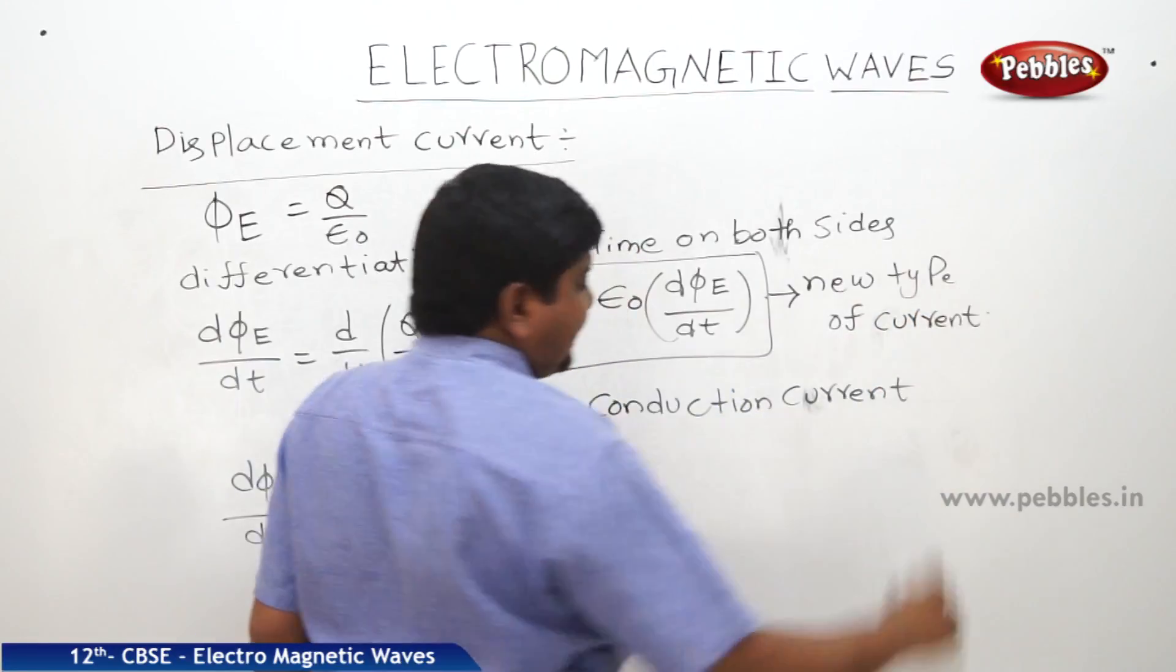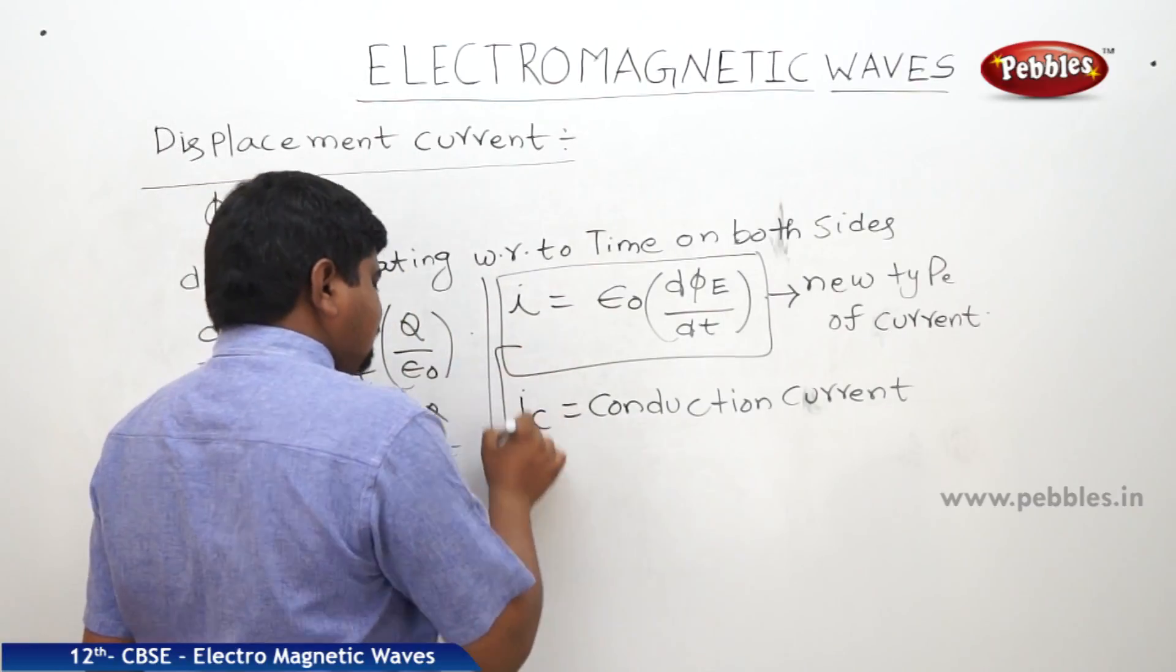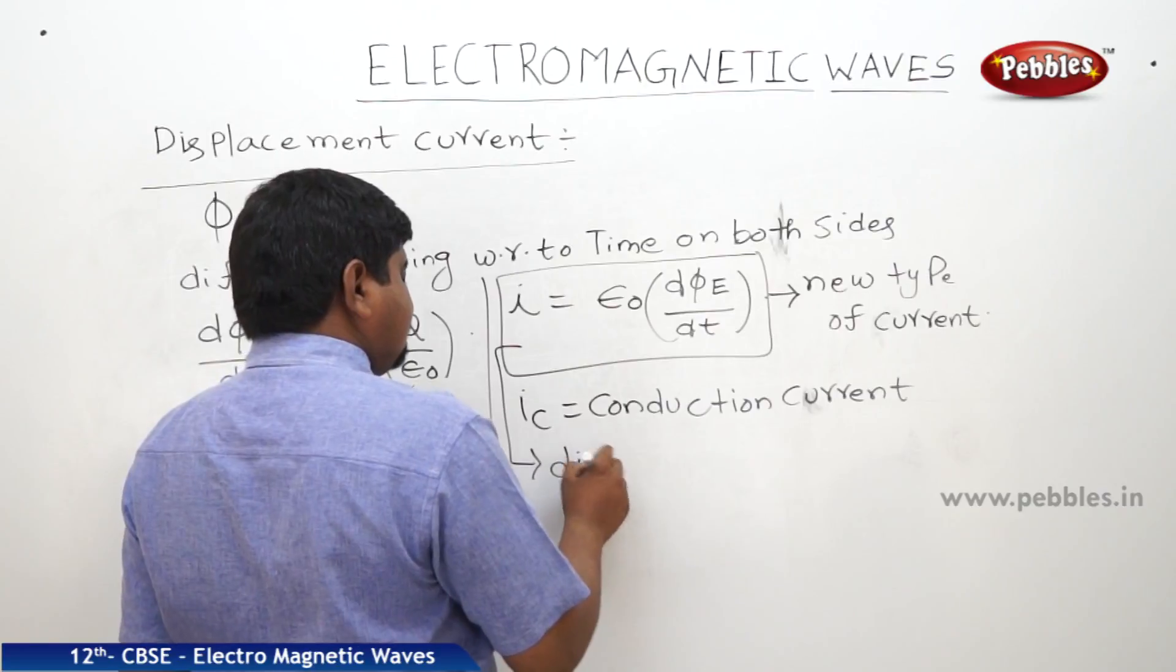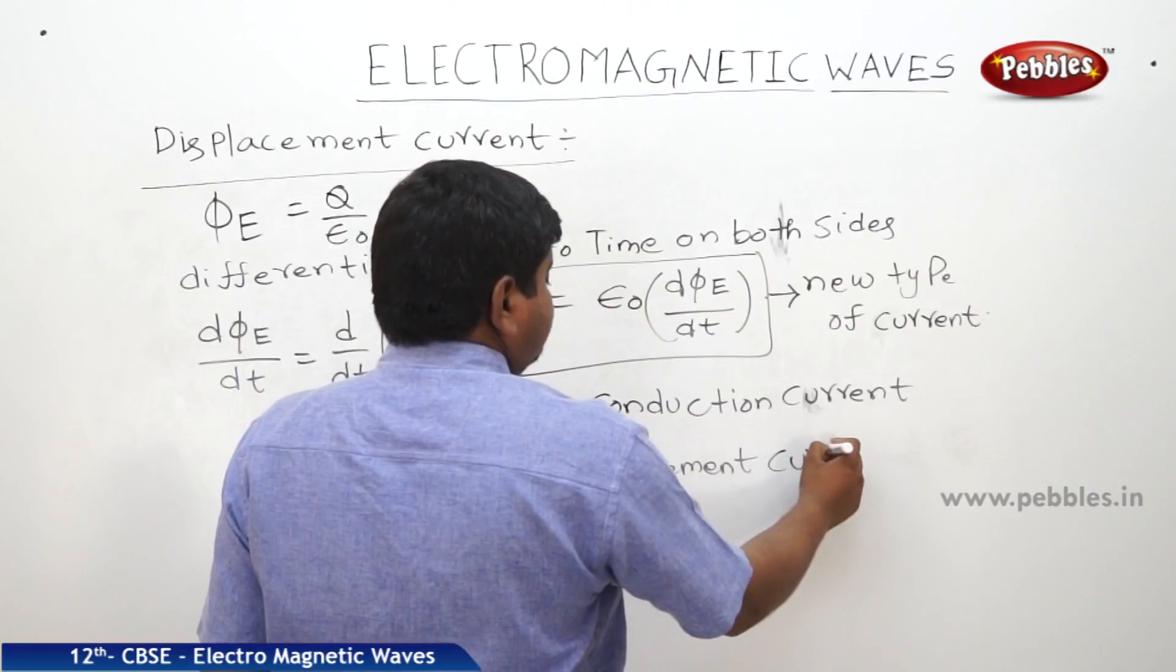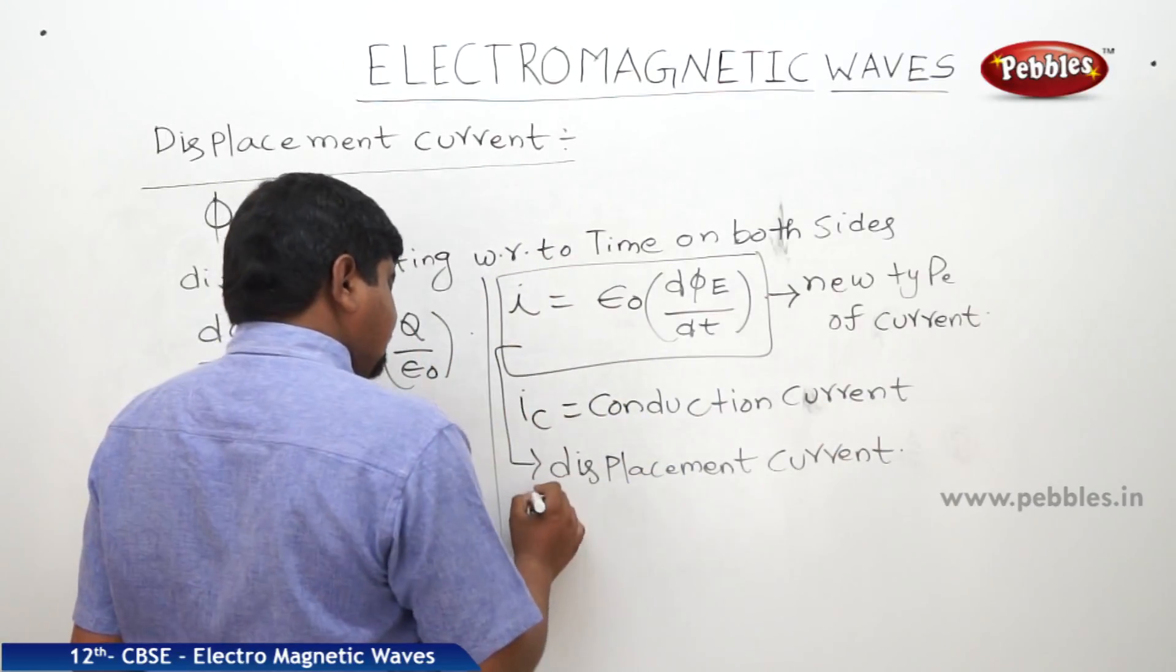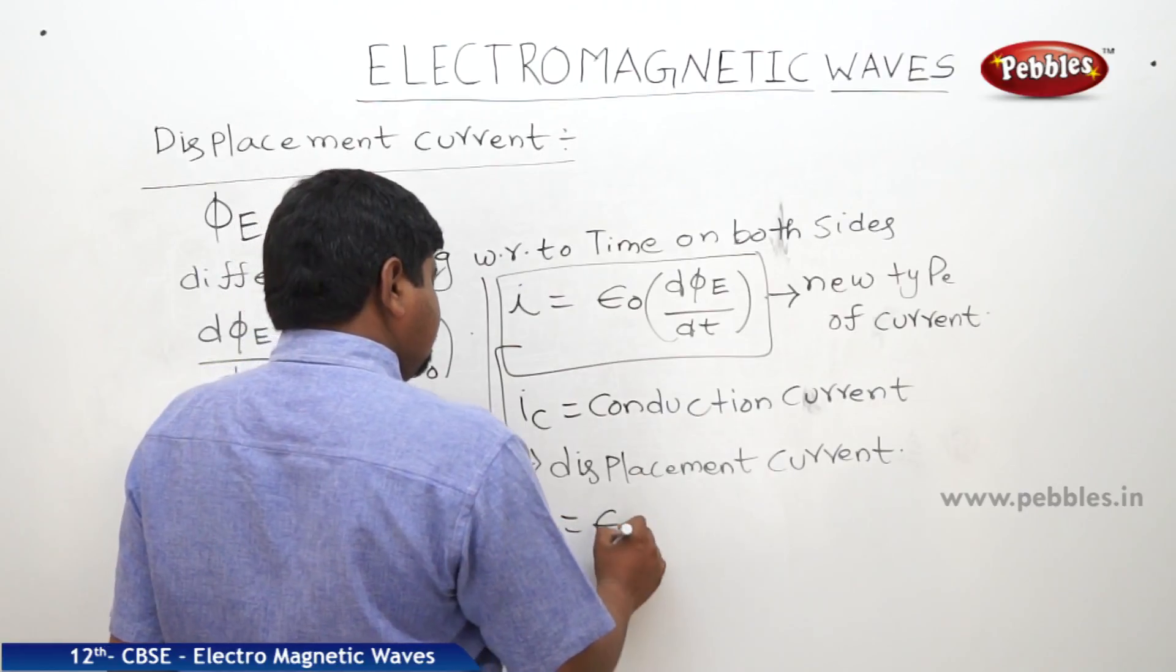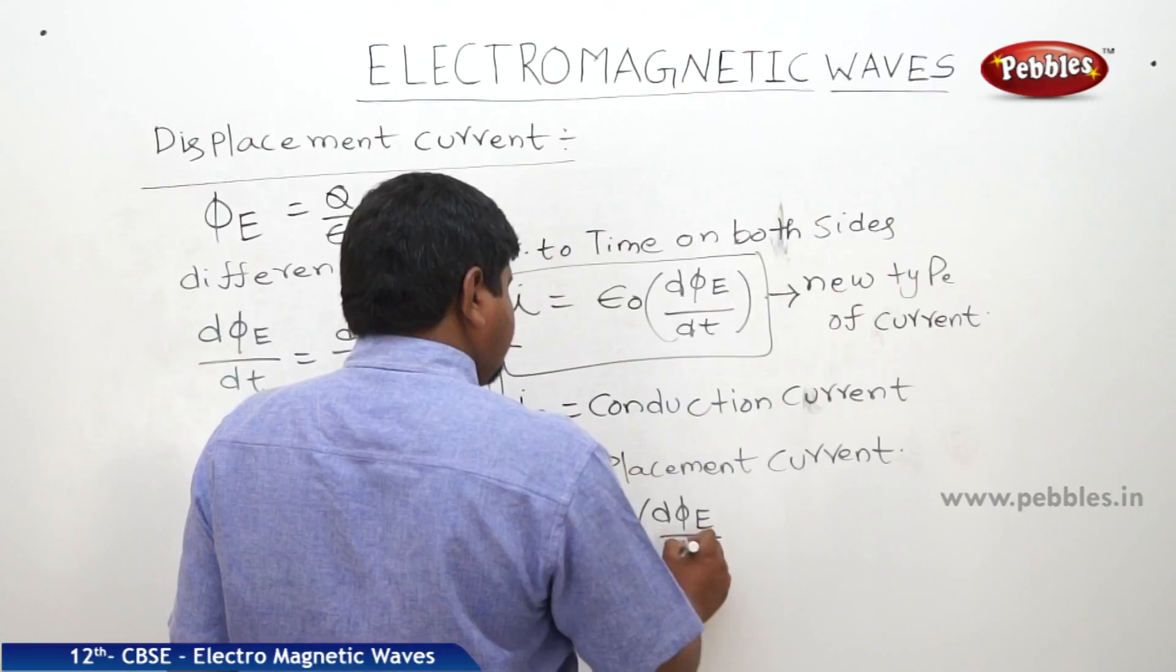Mr. James Maxwell, after analyzing all the experiments, he said this one has displacement current. So, the expression will change like this. Id is equal to epsilon naught into d phi E by dt.